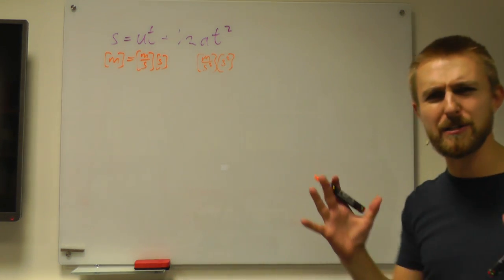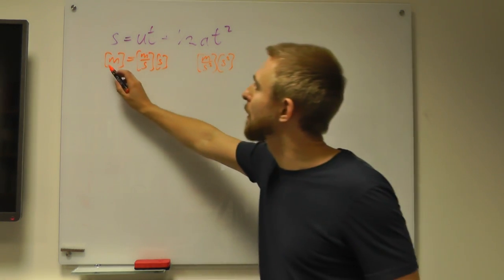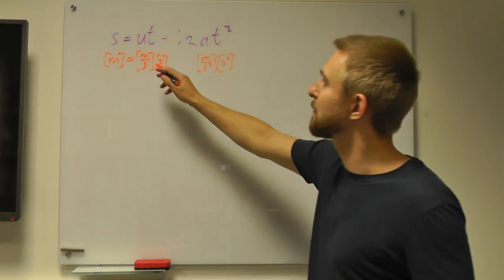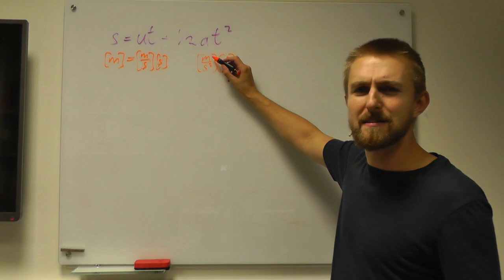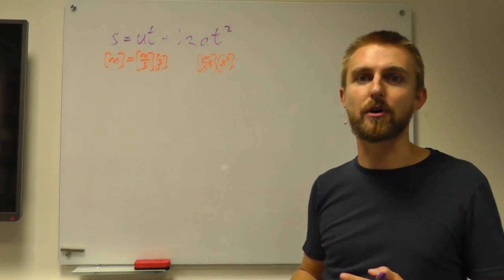So now we flick through each of the units and we say, okay, are they the same in every part of the equation? We've got meters on one side, and we've got meters per second times seconds, well those cancel, that's fine, we're back to meters, and we've got meters per second squared times seconds squared, we're all good.